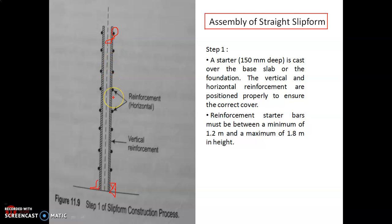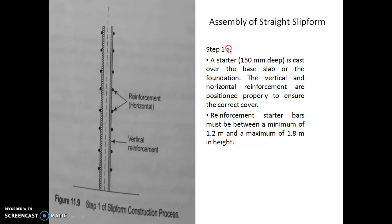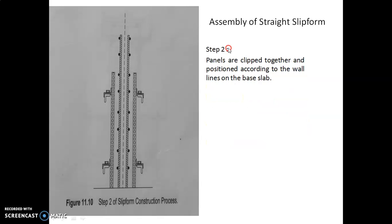The vertical and horizontal reinforcements are positioned properly to ensure the correct cover. The reinforcement starter must be between a minimum of 1.2 meters and a maximum of 1.8 meters in height. Note that the kicker is not shown in this diagram. That is the first step.